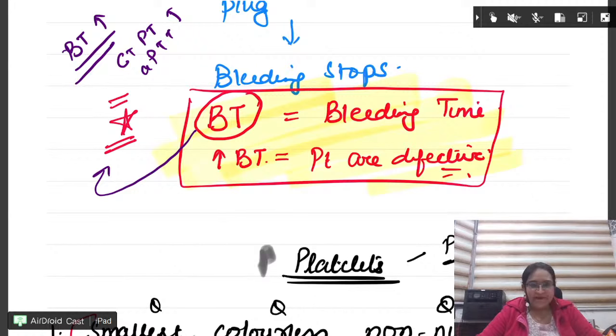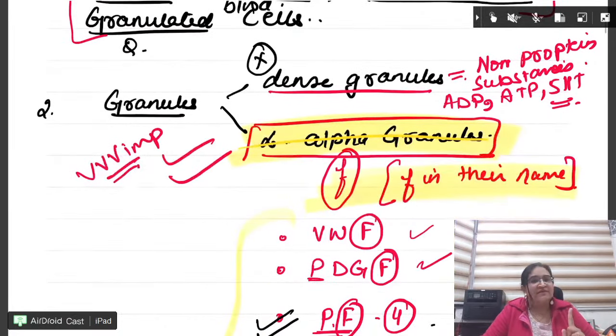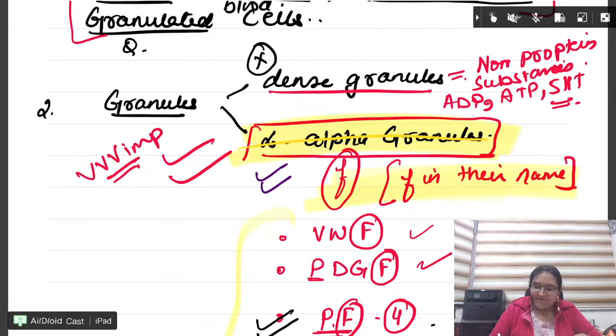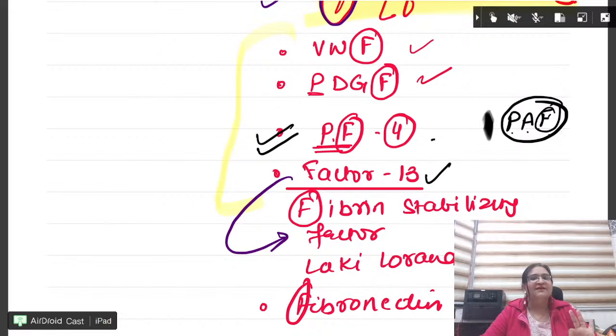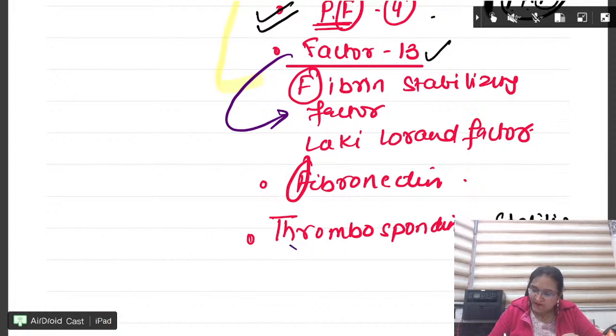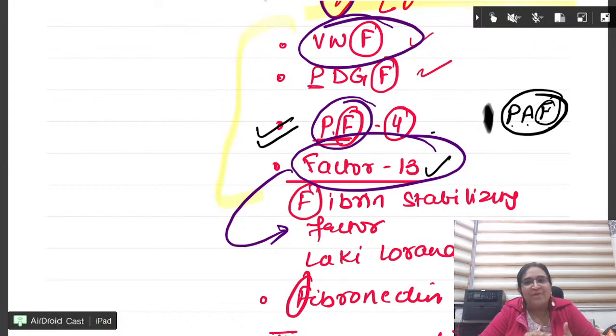The platelets afterwards will aggregate also. That will happen with thromboxane A2, ADP, collagen, fibrinogen. This is how a loose platelet plug is formed. Please remember, the function of platelet is assessed by BT, bleeding time. Whenever bleeding time is increased, you have to understand that it is definitely a platelet disorder. If clotting time, PT, APTT, they are increased, then definitely it is a clotting factor disorder. But von Willebrand disease is one where you will have bleeding time also problem and the other factor is also a problem. APTT will also be altered a little bit.